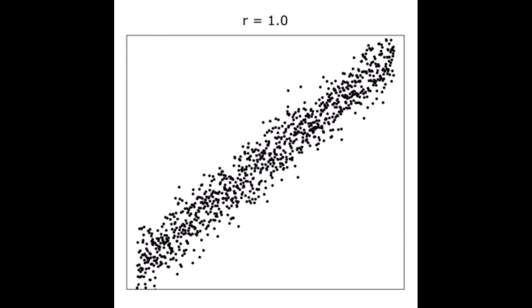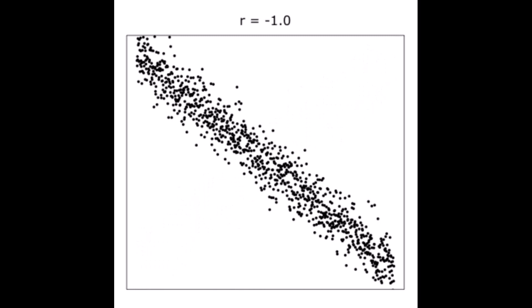The sign of the number indicates the direction of the relationship. A positive number means both variables change in the same direction. An increase in one variable is met with an increase in the other one, too. A negative number, however, indicates the variables change in opposite directions. When one increases, the other decreases.